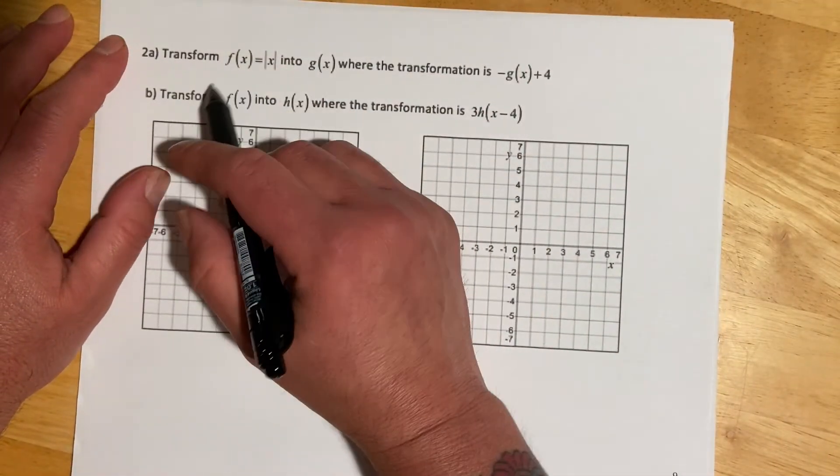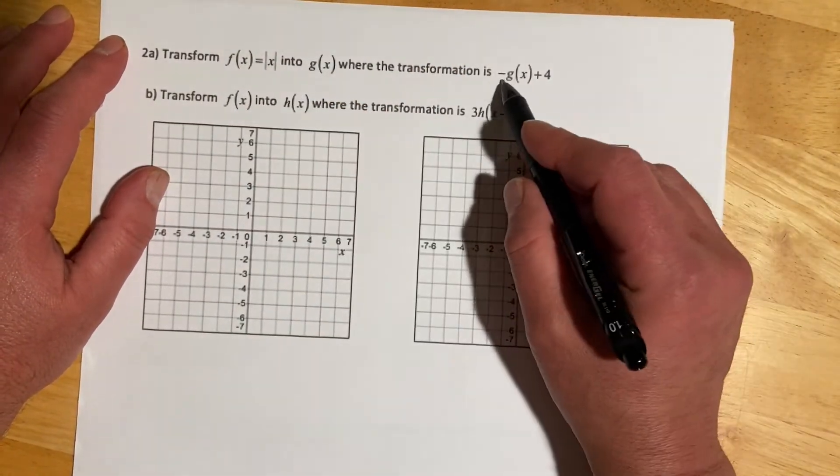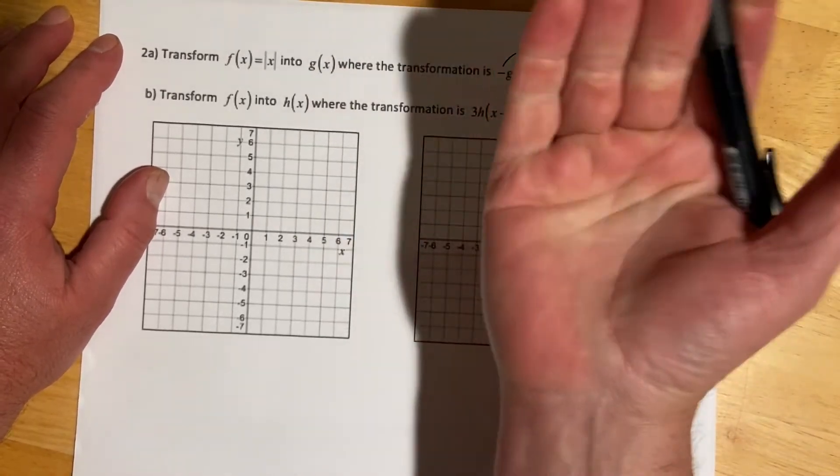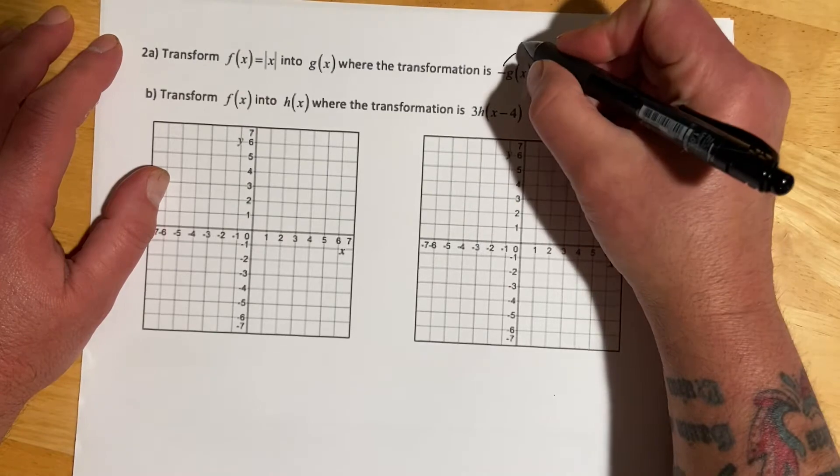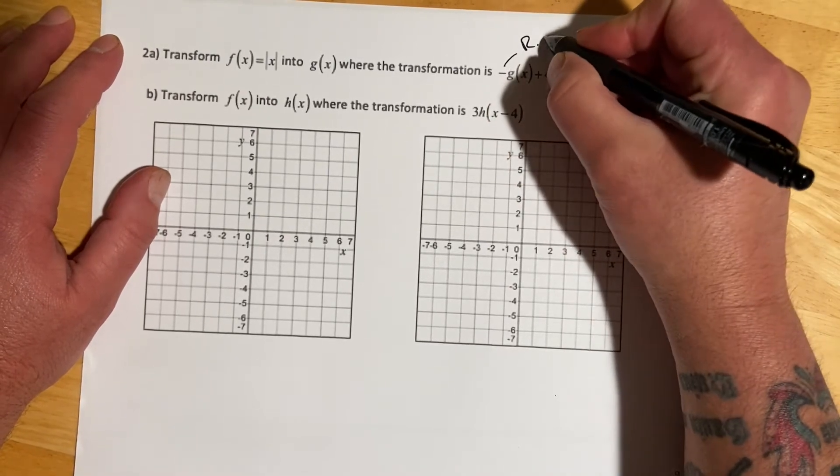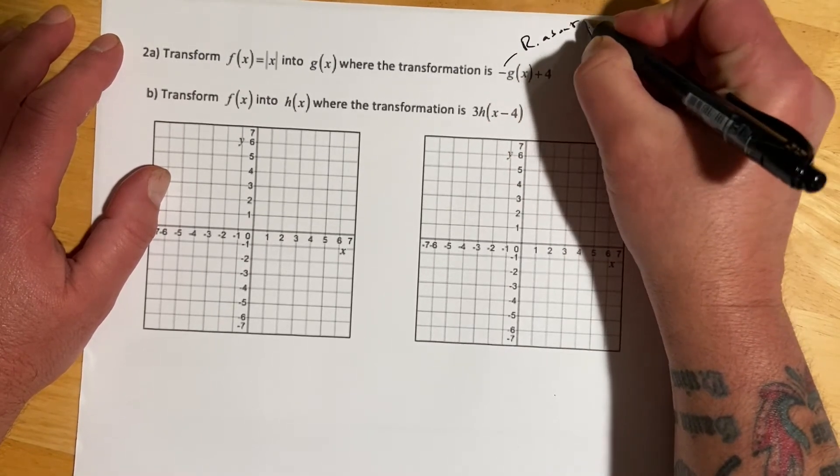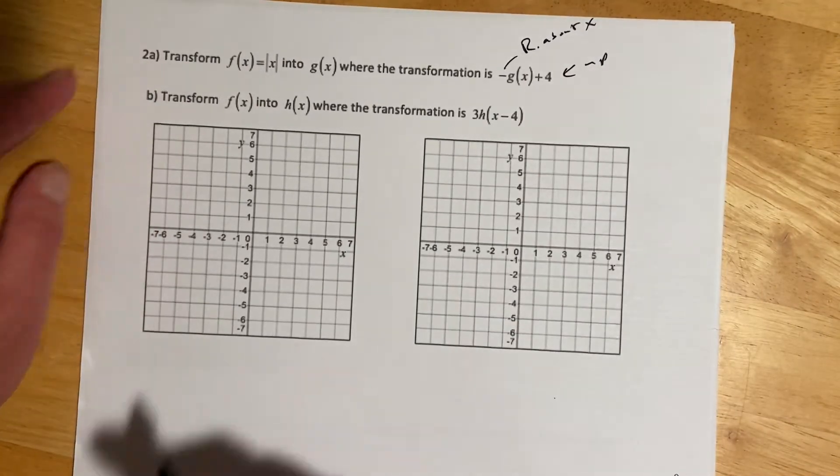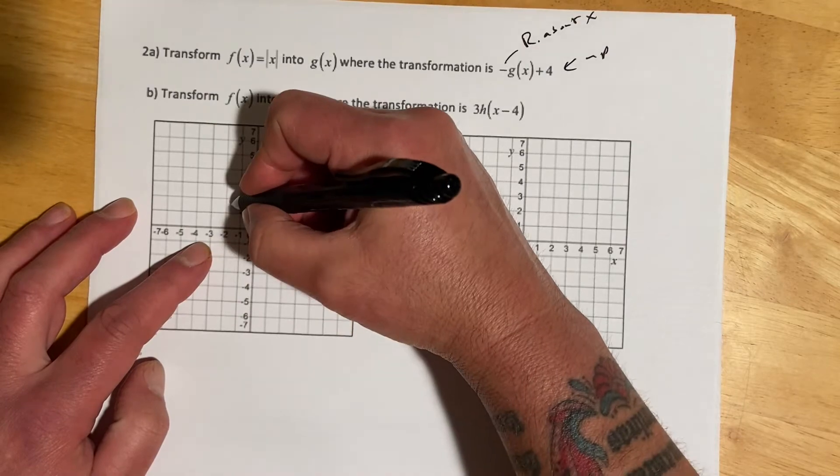For 2a, we're transforming absolute value of x with a reflection and an up 4. That's going to be reflect, so it's in front, so that's reflect about the x-axis, and then up 4.